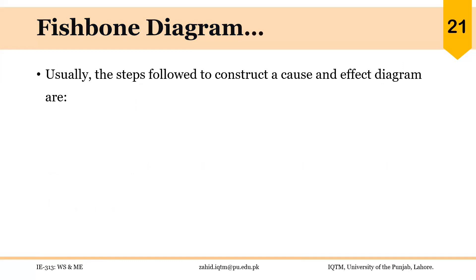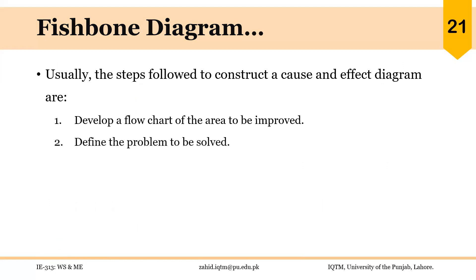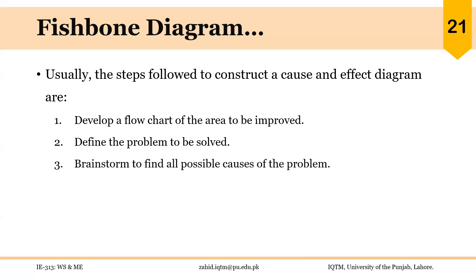Usually, the steps followed to construct a cause and effect diagram are: first, develop a flow chart of the area to be improved so that we have a fair idea of the overall flow of the process and interdependence of different operations. That is not mandatory, but it is suggested. Then define the problem to be solved. Brainstorm to find all possible causes of the problem — the cause and effect diagram is a brainstorming activity and is constructed after brainstorming.